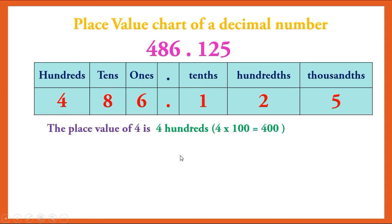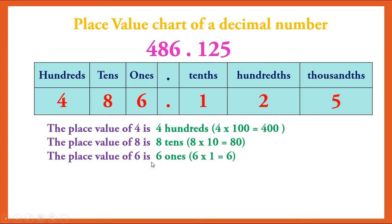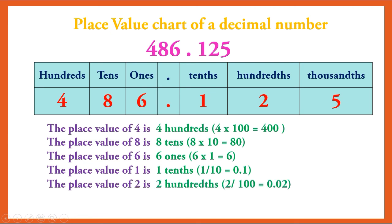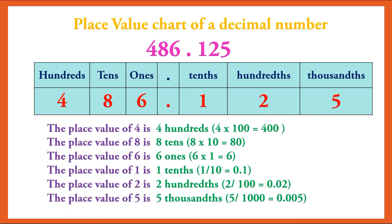The place value of 4 is 4 hundredths. The place value of 8 is 8 tens, meaning 8 multiplied by 10, which equals 80. The place value of 6 is 6 ones, meaning 6 multiplied by 1, which equals 6. The place value of 1 is 1 tenth, meaning 1 divided by 10, which equals 0.1. The place value of 2 is 2 hundredths, meaning 2 divided by 100, which equals 0.02. The place value of 5 is 5 thousandths: 5 divided by 1,000 equals 0.005.